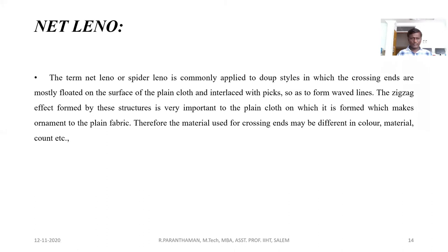Next is net leno structures. These are all called net leno or spider lenos. The crossing ends are mostly floated on the surface of the plain cloth and interlaced with the picks, so as to form lines in a zigzag effect in the fabric surface.